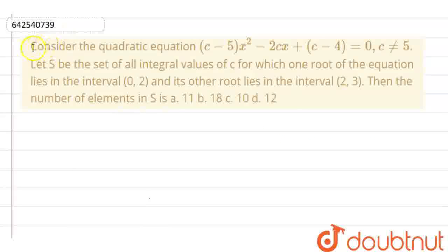Hello everyone. In this question we have: consider the quadratic equation (c-5)x² - 2cx + (c-4) = 0, where c is not equal to 5. Let S be the set of all integral values of c for which one root of the equation lies in the interval (0,2) and its other root lies in the interval (2,3). The number of elements in S is what, and we have four options.